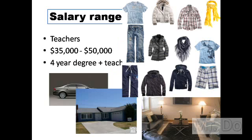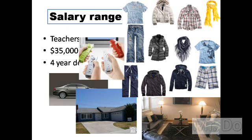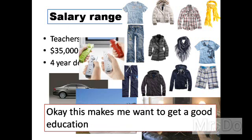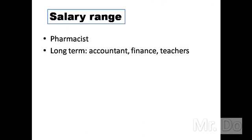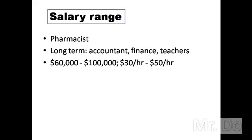In terms of clothes, you can get nicer options, and for entertainment you can get a family setup with a TV and a small system. It's pretty much an average life. Next, let's look at someone who makes more money than a teacher — like an accountant, or someone in finance, or a teacher who has worked a long time — equivalent to a pharmacist, starting at $60,000 and going up to $100,000.